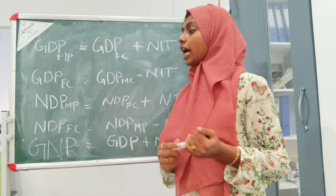GDP at market price, GDP at factor cost, and NIT — net indirect tax. GDP factor cost plus net indirect tax equals GDP market price. Conversely, GDP market price minus NIT gives GDP at factor cost.